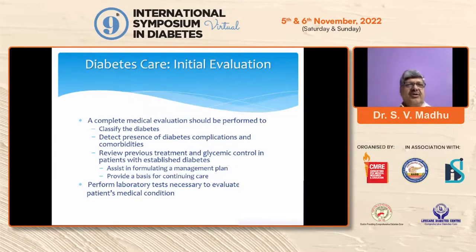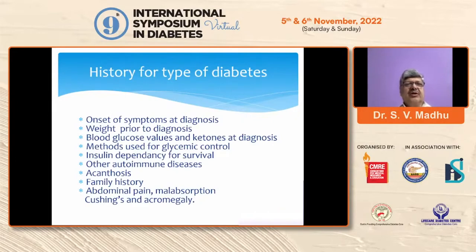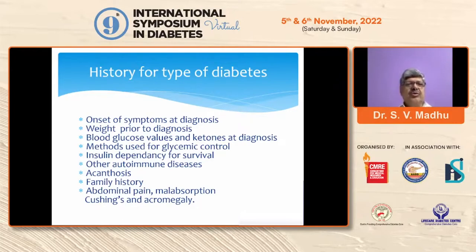In the initial evaluation of diabetes, once you've made the diagnosis, a complete medical evaluation is important: to classify the diabetes, identify complications and comorbidities, review previous treatment and glycemic control — all of which will help formulate a management plan. To classify the type of diabetes, several factors are useful: onset of symptoms at diagnosis, weight prior to diagnosis, blood glucose values and ketones at diagnosis, methods used for glycemic control, history of autoimmune diseases, acanthosis favoring insulin resistance, family history of diabetes, possibility of MODY, and history of secondary causes like pancreatic or endocrine disease.